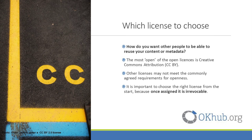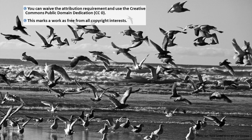It is important to choose the right licence from the start because once assigned it is irrevocable. You can also waive the attribution requirement and use the Creative Commons Public Domain Dedication or CC0 to mark your work as free from all copyright interests. This is well suited to metadata and bibliographic records and is the approach taken by institutions like the British National Bibliography for their linked data records.